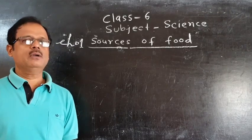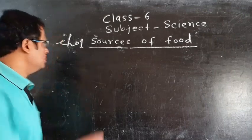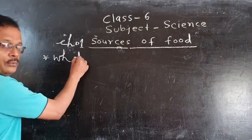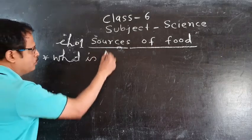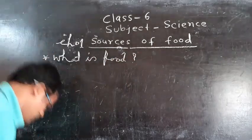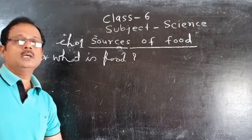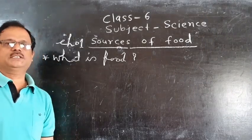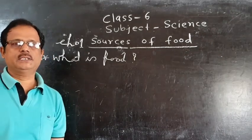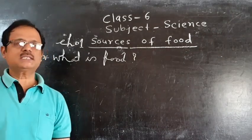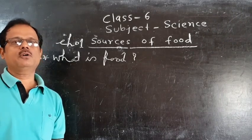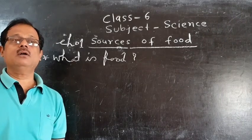To start, we all need to know: what is food? Food are the substances which include various types of nutrients. It means various types of nutrients are present in substances obtained from plants and animals. They are called food.